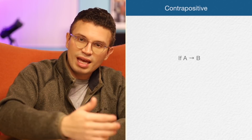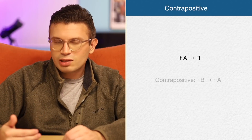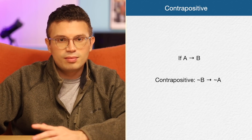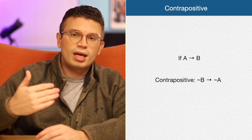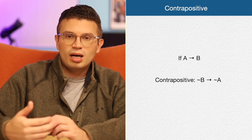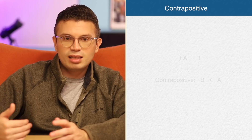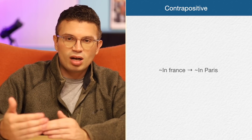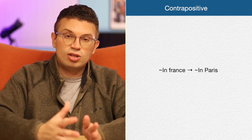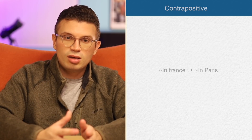We also have the contrapositive, which is an equivalent statement of your original conditional. So if we have 'if A, then B,' our contrapositive will be 'not B, then not A.' Remember, for the contrapositive you have to negate and flip. The contrapositive of that France example would be: if I am not in France, then I am not in Paris. We cover that in the conditional logic lesson.